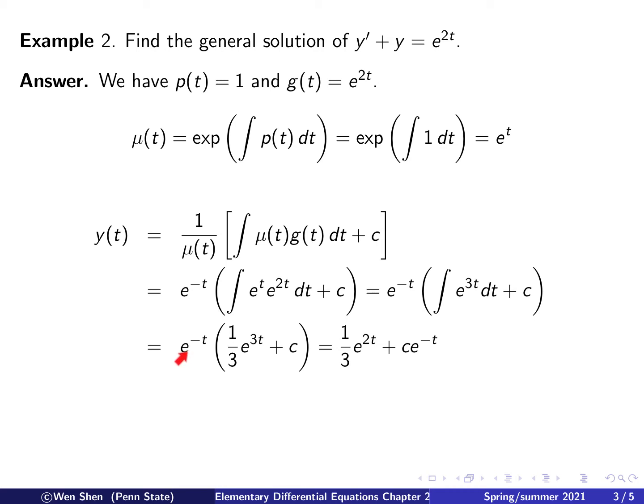Finally I distribute this exponential function onto the two terms, so the 3 becomes 2 because I subtract the t, giving one third e to the 2t, and then plus c times e to the negative t. The solution consists of two terms: the first term is an exponential growth term with a fixed constant 1 over 3, and the second term is an exponential decay term with an arbitrary constant c.